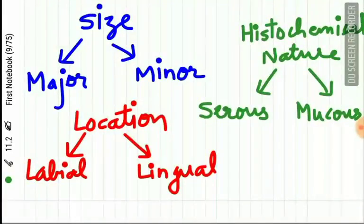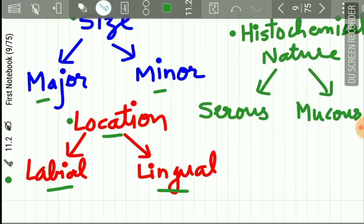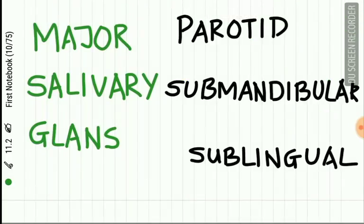The salivary glands are classified on three criteria. First, depending upon size, they are classified as major glands and minor glands. Second, on the basis of location, they are classified as labial and lingual salivary glands — this mainly applies to minor salivary glands. Third, depending upon histochemical nature, they are classified as serous glands and mucus glands.